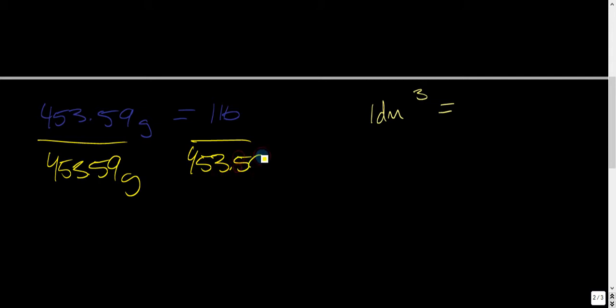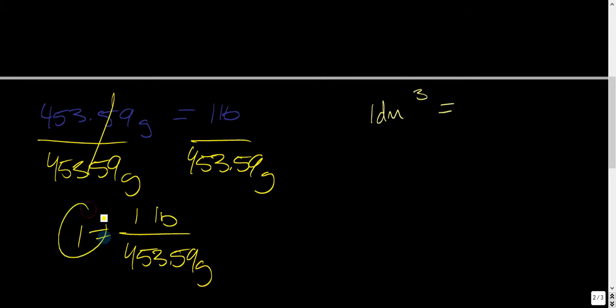So that goes away, 1 equals 1 pound over 453.59 grams. It works essentially because everything is equal to 1 that we're using.